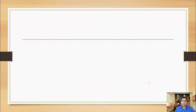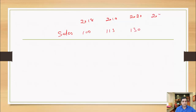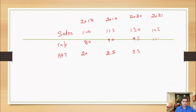Let me explain trend analysis with a small example. Suppose sales in 2018 were ₹100, in 2019 it was ₹115, in 2020 it was ₹130, and in 2021 it was ₹141. For expenses: in 2018 expenses were ₹80 so profit was ₹20; in 2019 expenses were ₹90 so profit was ₹25; in 2020 expenses were ₹95 so profit was ₹35.